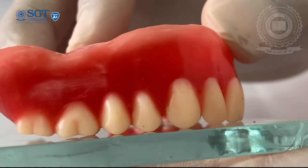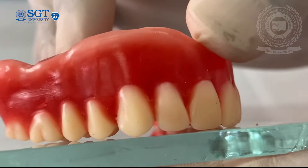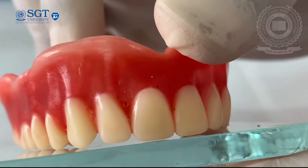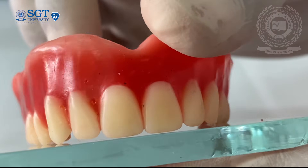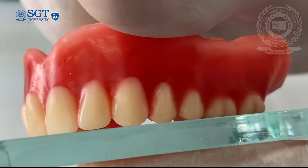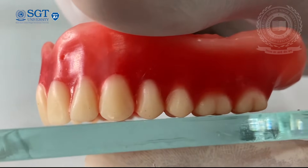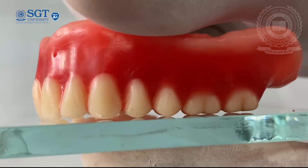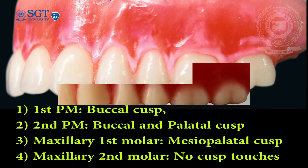At this stage, we confirm the horizontal glass slab relation of all the maxillary teeth and remove any discrepancies if found. For the maxillary central incisor, the incisal edge is touching the glass slab. For the lateral incisor, the incisal edge is 0.5 to 1 mm above the glass slab. For the canine, only the cusp tip is touching. For the maxillary first premolar, only the buccal cusp is touching the glass slab. For the maxillary second premolar, both the buccal and palatal cusps are touching. For the maxillary first molar, only the mesopalatal cusp is touching, whereas for the maxillary second molar, there is no cusp touching the glass slab.